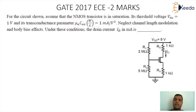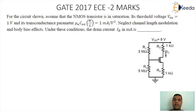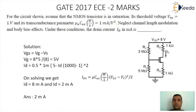If you observe the circuit, we need to find the drain current. This question is basically on the potential divider bias circuit of MOSFET. The first thing we need to find is the Thevenin's equivalent voltage. The Thevenin's equivalent voltage will be VDD × R2 divided by (R1 + R2).